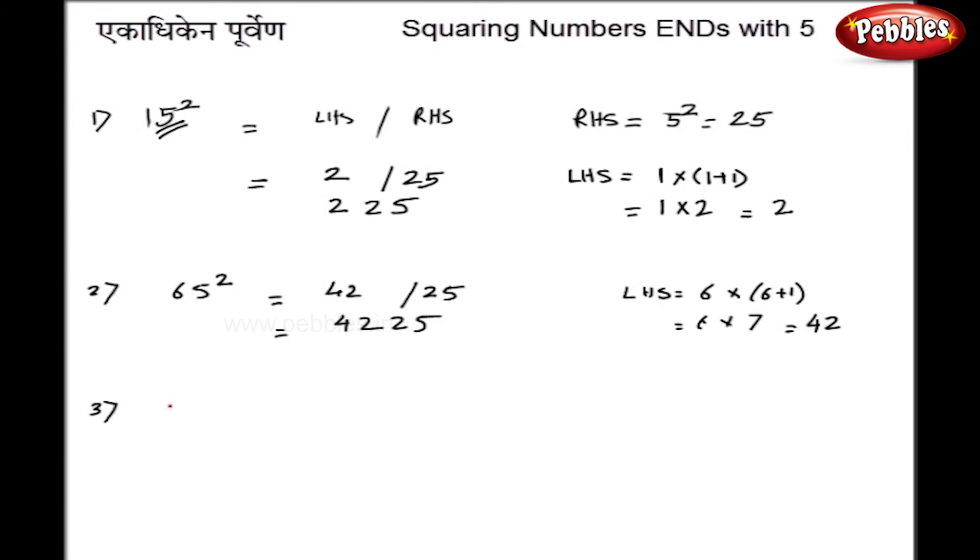Third example is 195 square. Method is exactly same. I get 25 on the right hand side and on left hand side, I will get 19 multiplied by 20.